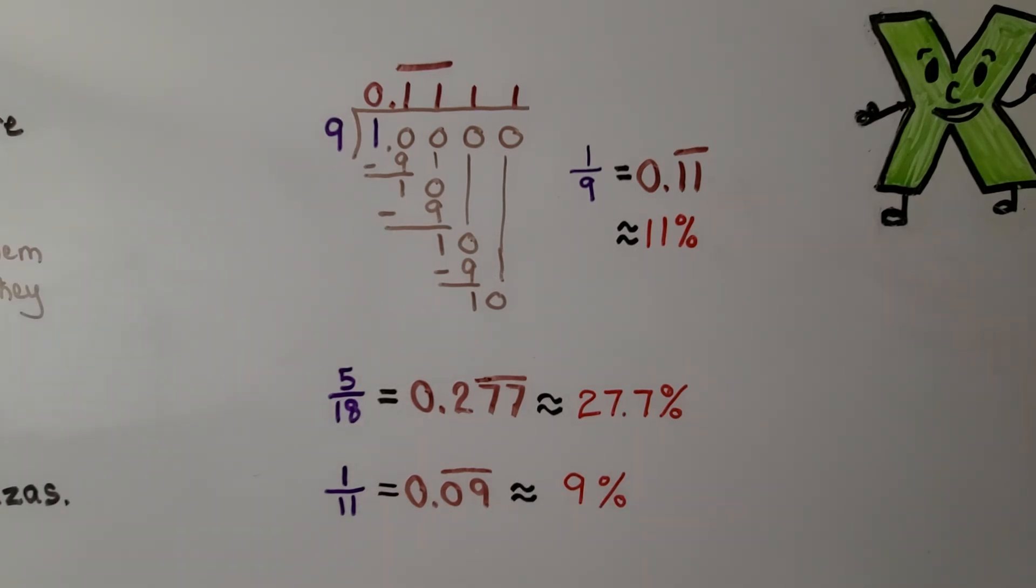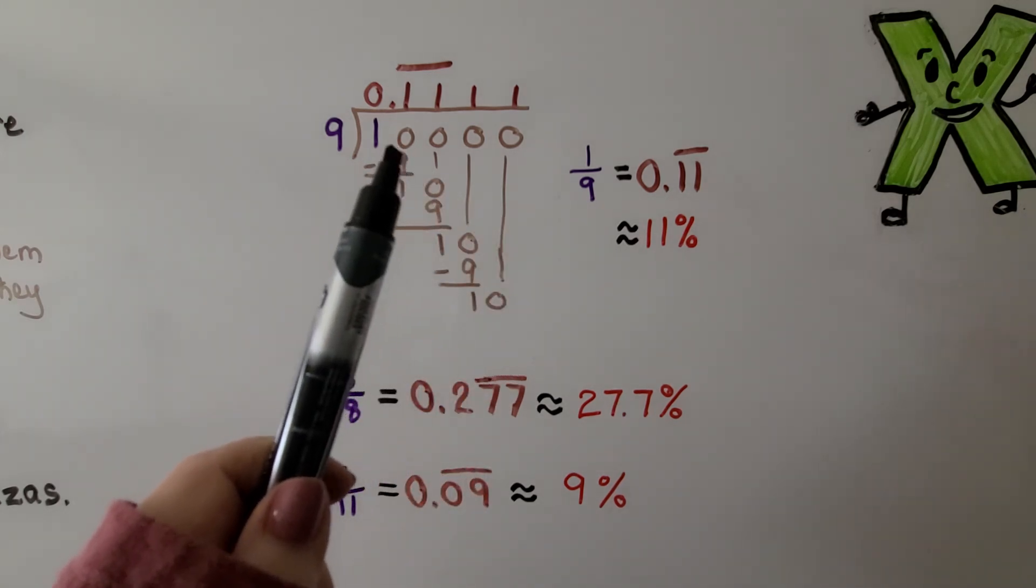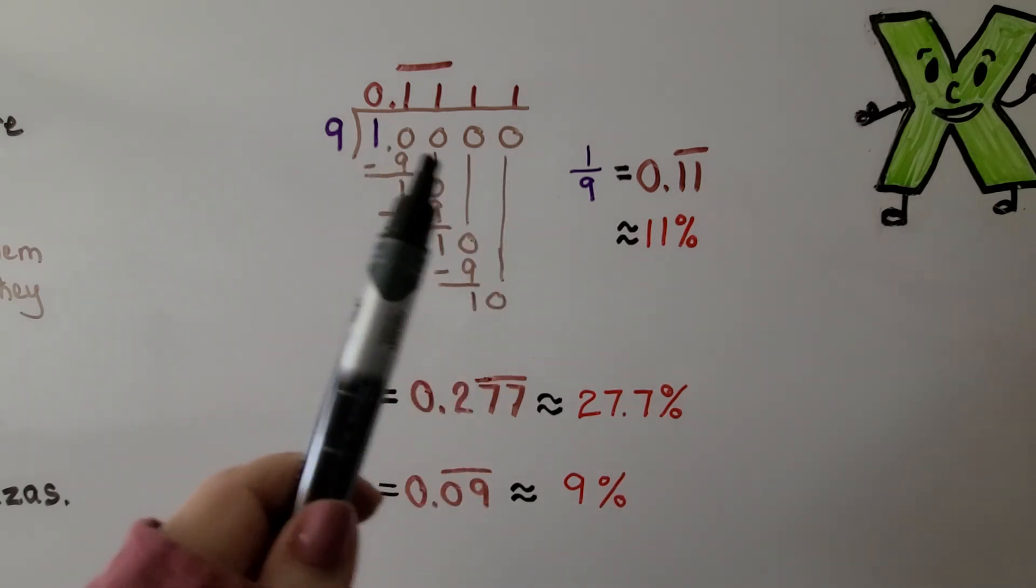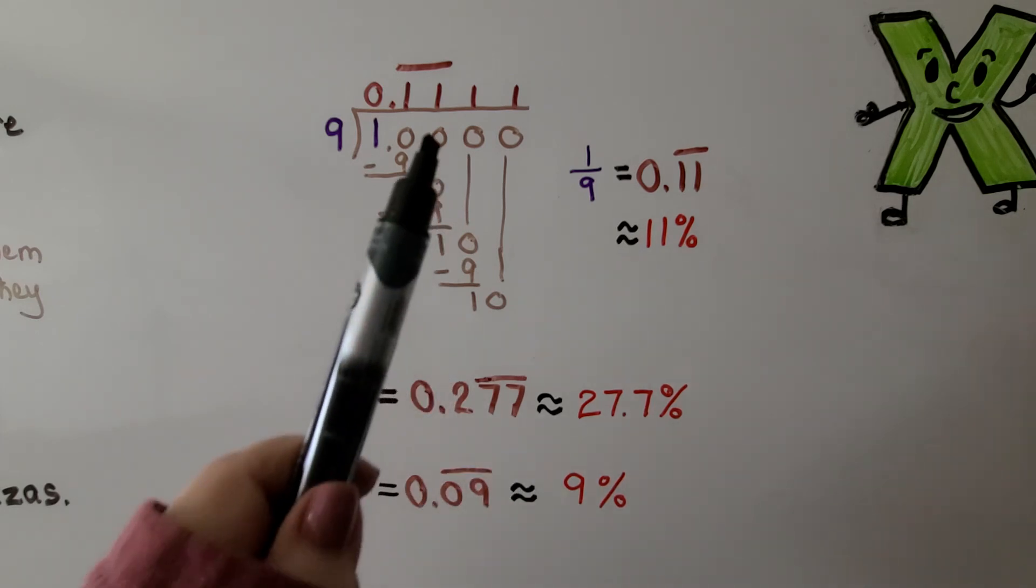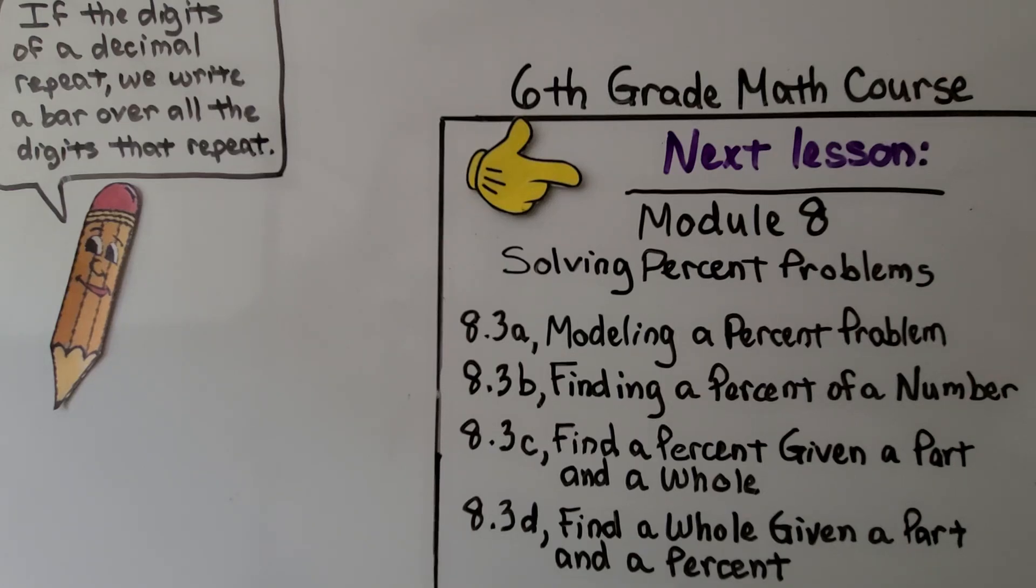Though this isn't really part of the lesson, it's probably the question I get asked the most. What happens if I want to keep dividing? We just add a decimal point and more zeros and keep dividing. And if it repeats, we put a bar over the top of the ones that are repeating.